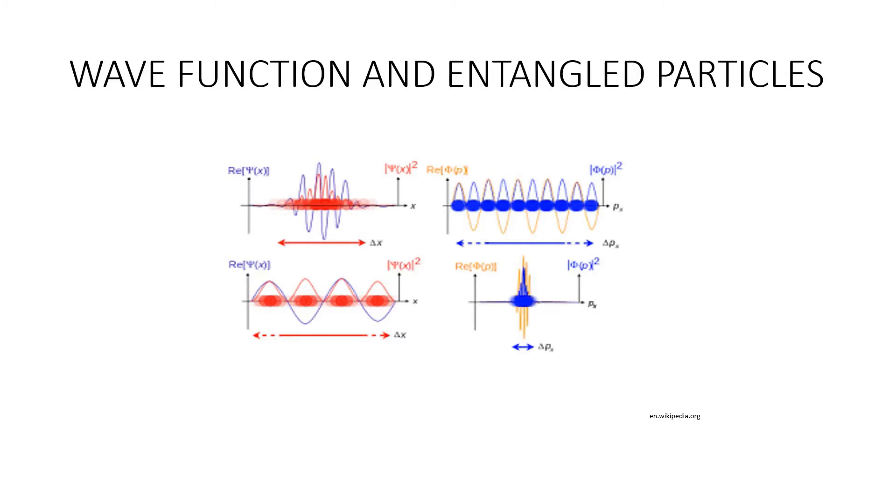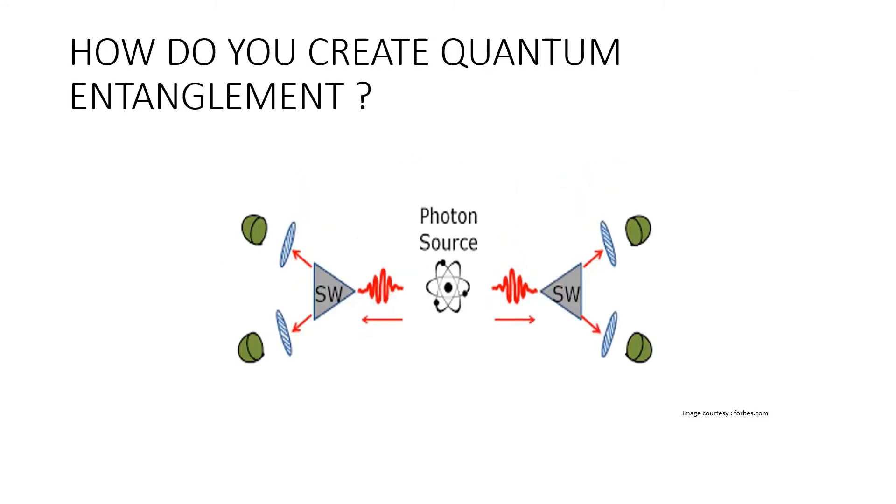How do you create quantum entanglement? This is a simple experiment. By using this simple experiment, we can create quantum entanglement. The vast majority of quantum entanglement experiments to date use photons as the entangled particles, for the simple reason that it's really easy to entangle two photons.